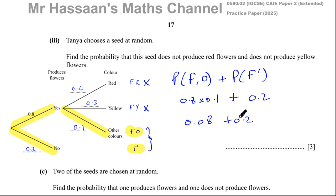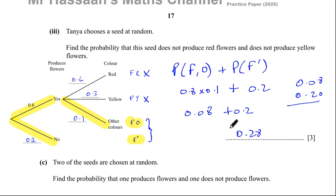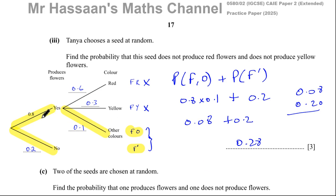Adding 0.08 plus 0.2 gives 0.28, and that's the answer to part 3. The important point is: when you want to combine separate outcomes, you add the probabilities of those outcomes together. When you want to find a particular outcome, you multiply along the branch.